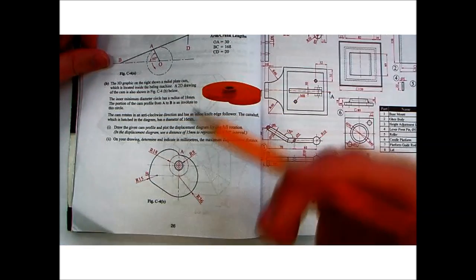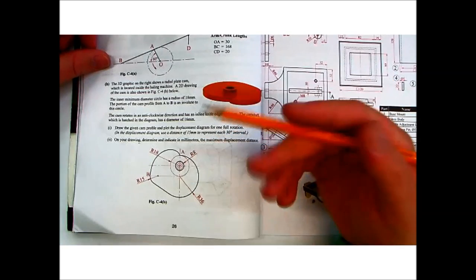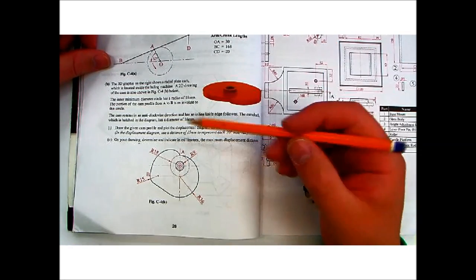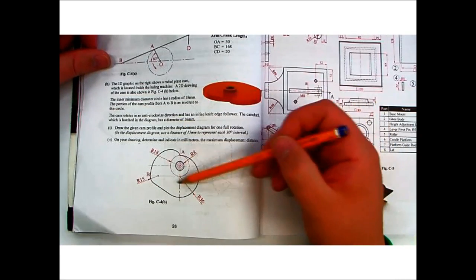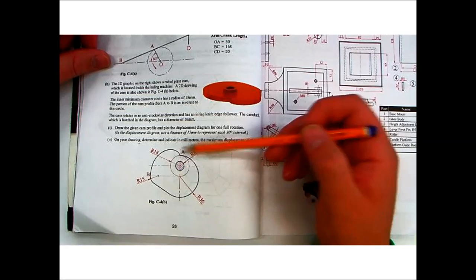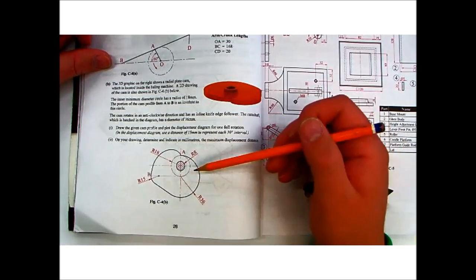Normally CAM questions, the norm should be to give you how the displacement diagram is going to work, and then draw the CAM from that. But in this case, they're going to give you the CAM, and you have to work off that for the displacement diagram. So let's draw what's given first.